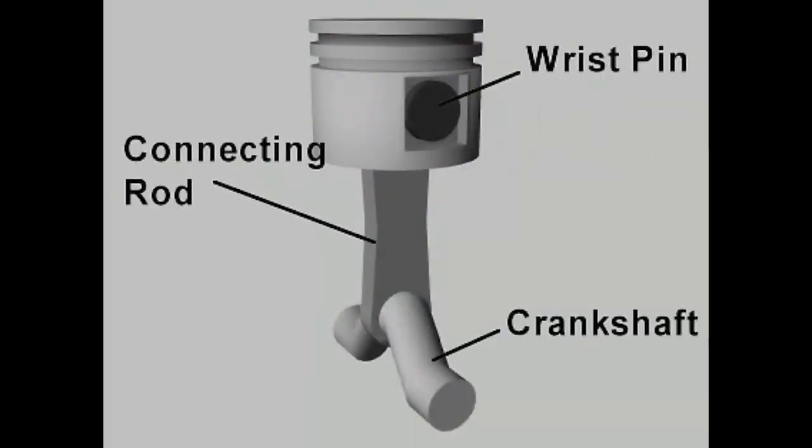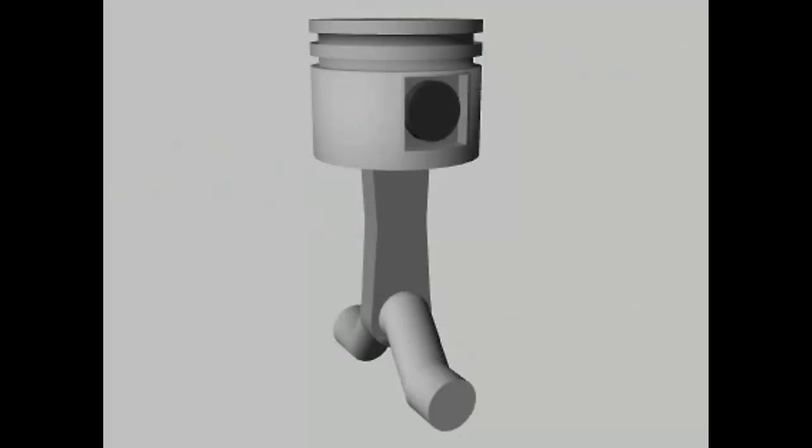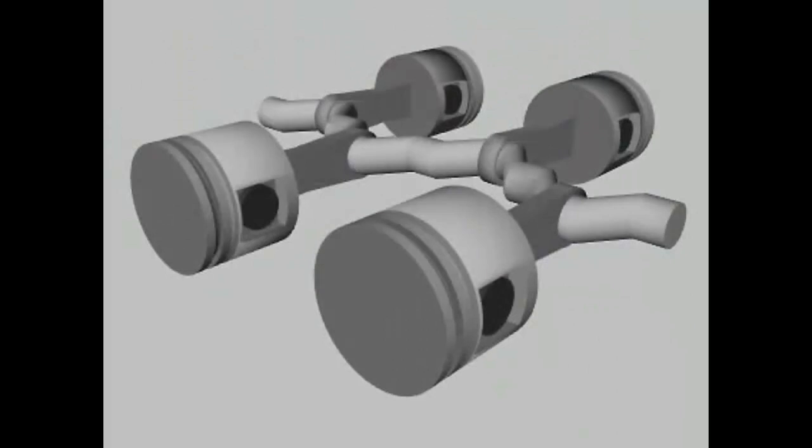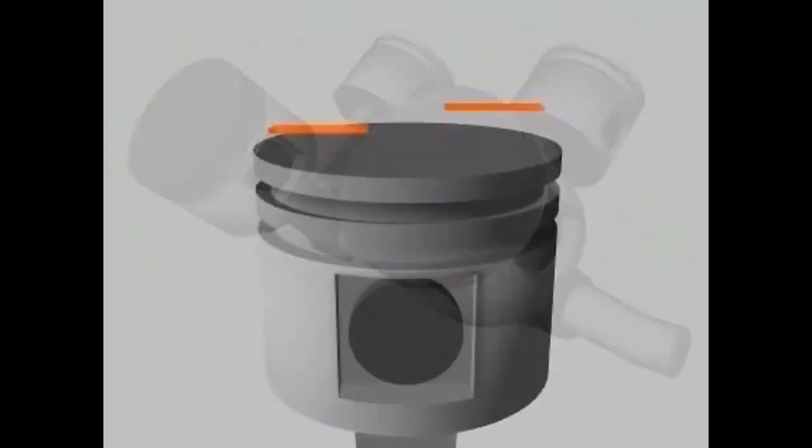The pistons are directly driven through a wrist pin and connecting rod from a crankshaft. Depending on their size, reciprocating compressors may have one or more cylinders. Multiple cylinders may be arranged in line, opposed, or in a V.